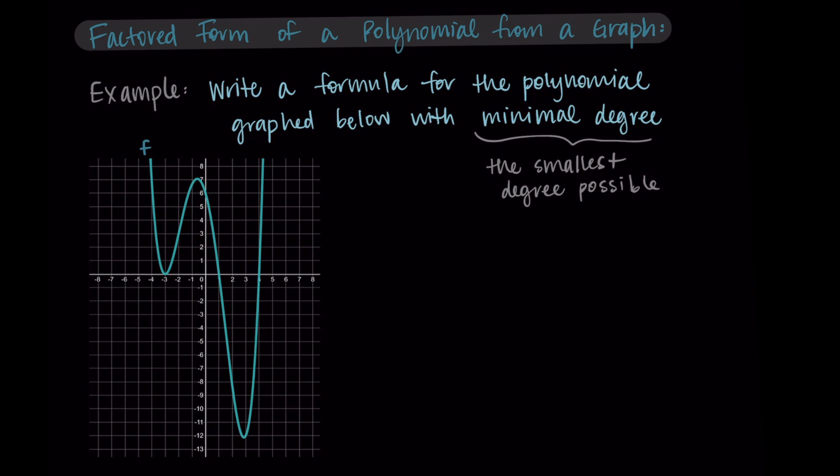Okay, so we have our function here, and we need to piece together what's going on. First, I noticed that both ends are going upwards. This tells me that I have an even degree polynomial with a positive leading coefficient. This is similar to x squared, which has both ends going up, that has a positive leading coefficient and an even degree. So we know those two things need to be true for whatever formula we come up with.